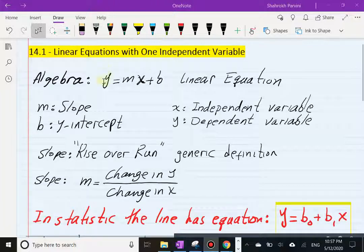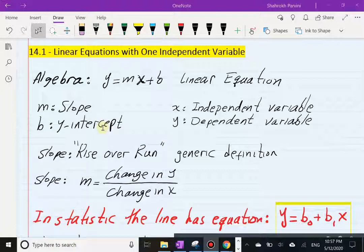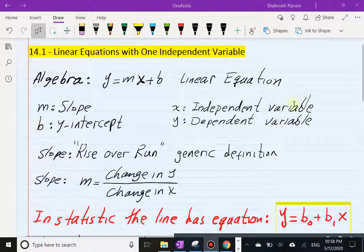Just a review of algebra here. In your algebra classes you probably remember the equation of a line. The general form of a linear equation is given by y equals mx plus b. Now m here, the coefficient on x, the number that multiplies by x, m is the slope, and b is the y-intercept. x we call the independent variable and y becomes the dependent variable.